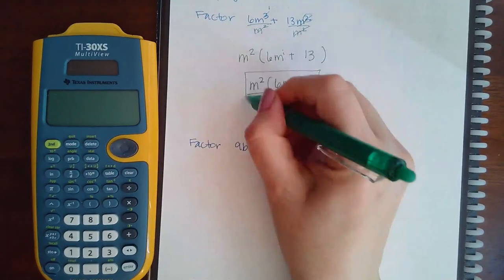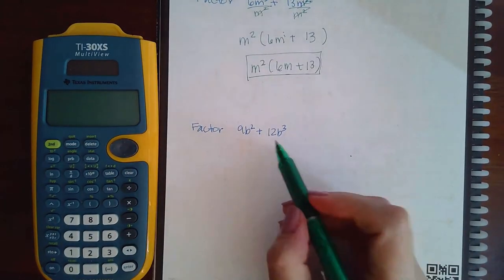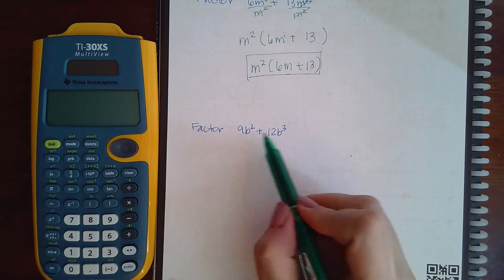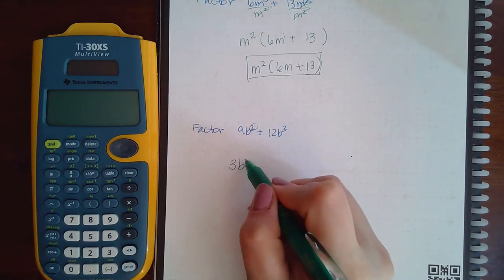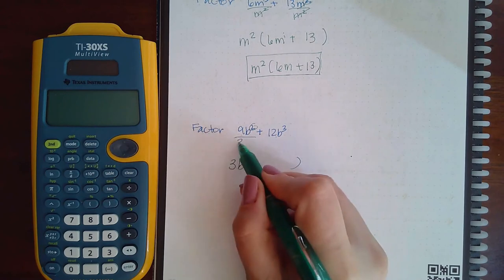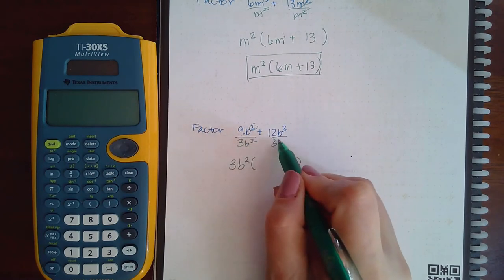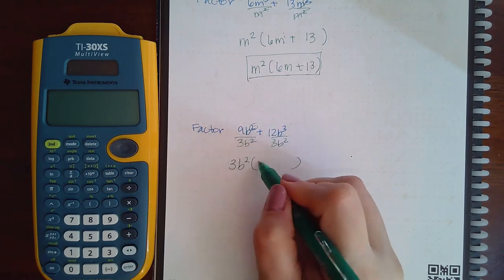Now for the second example, here we have these numbers I can divide both of these by three and then the smaller exponent is b squared. So if I divide each term by 3b squared I will get three, the b's all cancel I will get four.